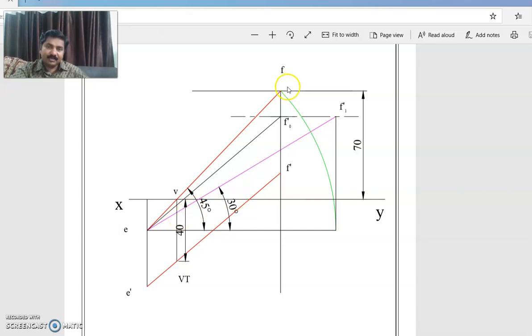End F is 70mm behind VP, so through E we will draw a line which is at an angle 45 degrees with XY line. End F is 70mm behind, that means F has to be drawn 70mm above XY line.